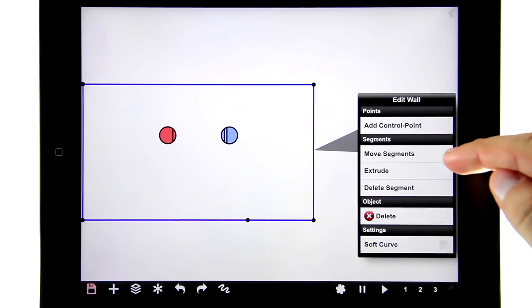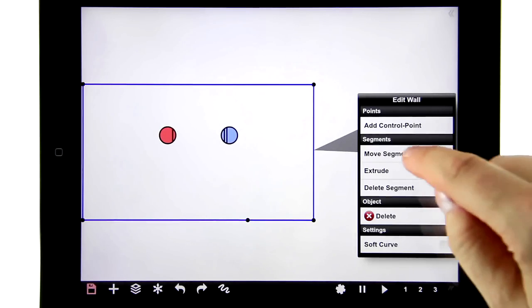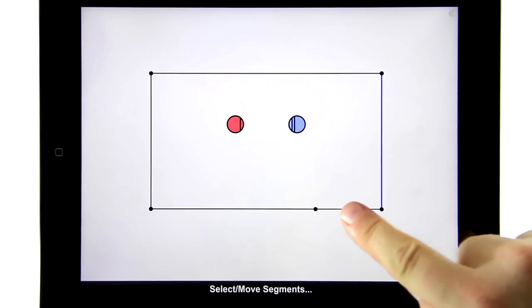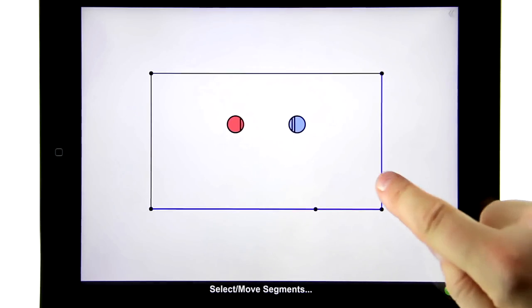We're especially interested in move segments and extrude. I think move segments is probably pretty obvious—you just move the segment around. But what's maybe not so obvious is you can add more segments to the wall and then drag those as a group.